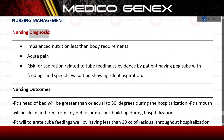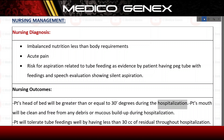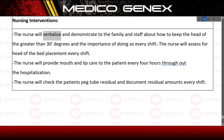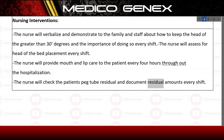Nursing management. Nursing diagnoses: imbalanced nutrition less than body requirements; acute pain; risk for aspiration related to tube feeding, evidenced by the patient having a PEG tube with feedings and speech evaluation showing silent aspiration. Nursing outcomes: head of bed greater than or equal to 30 degrees during hospitalization; mouth clean and free from debris or mucus buildup; patient will tolerate tube feedings with less than 30 cc of residual throughout hospitalization. Nursing interventions: nurse will verbalize and demonstrate to family and staff how to maintain head of bed greater than 30 degrees and the importance of doing so every shift; nurse will provide mouth and lip care every 4 hours; nurse will check PEG tube residual and document residual amounts every shift.